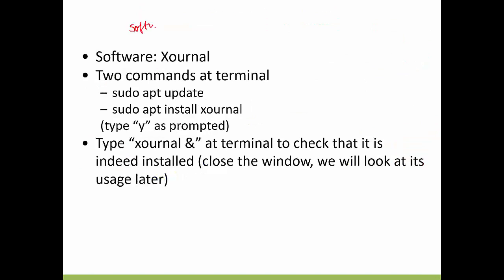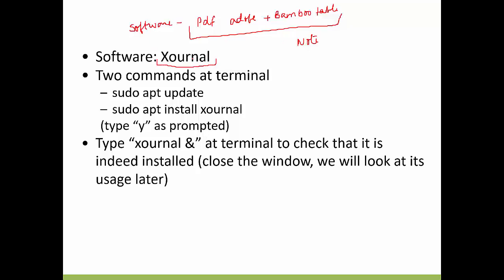In order to use the pen, the software needs to support it. For example, if you are opening a PDF through Adobe, Adobe supports it, for which you don't really require additional software, but you still require a Bamboo tablet plus Adobe. If you want note-taking capability where you want to organize notes in the form of chapters, sections, and pages, there is a software called Journal, and this software can be installed via two commands.